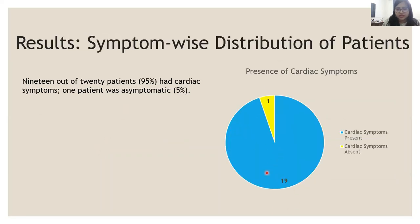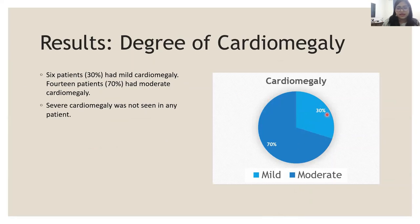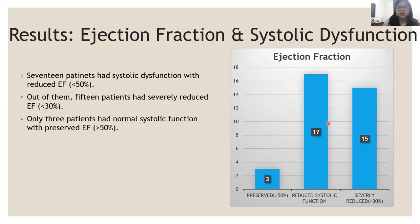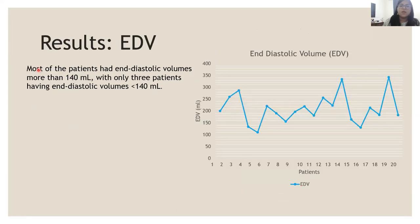19 patients had cardiac symptoms and one patient had no cardiac symptoms. 6 patients had mild cardiomegaly, 70% of patients (14 patients) had moderate cardiomegaly, and no patient showed severe cardiomegaly. 17 patients had dilatation of only the left ventricle, whereas 3 patients had dilatation of both left and right ventricles. 17 patients had systolic dysfunction with reduced ejection fraction less than 50%, of whom 15 had severely reduced ejection fraction less than 30%, and only 3 patients had normal systolic function with preserved ejection fraction more than 50%. Most patients had increased end-diastolic volume more than 140 ml, consistent with a dilated cardiomyopathy phenotype, and only 3 patients had normal end-diastolic volume less than 140 ml.